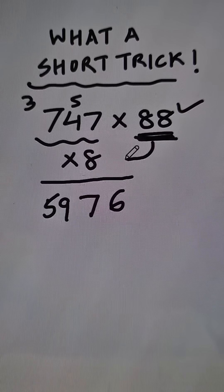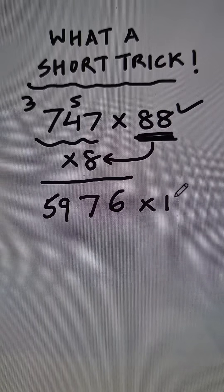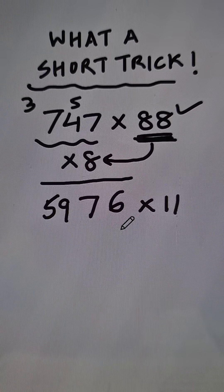Now since we have taken out the common factor 8 from 88, we need to multiply this number by 11, and for that I am going to use the pairing method.